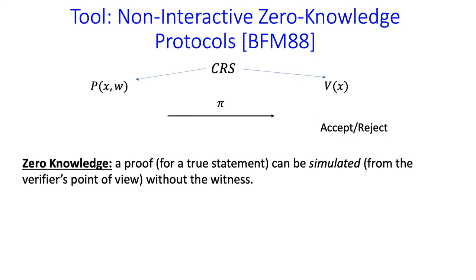That concludes the introduction. For the rest of my time, I want to talk about how our construction actually works. Since the ideas and construction are fairly simple, we're actually going to see quite a lot of it. One of the main tools we use is a non-interactive zero-knowledge protocol for NP. This is a one-message zero-knowledge protocol, which is able to exist because we make a different modeling assumption — namely, we assume the prover and verifier have access to a common reference string set up by a trusted third party.